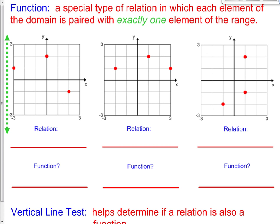Another term is function. A function is a special type of relation in which each element of the domain is paired with exactly one element of the range. Whenever you see a list of ordered pairs, you know it's going to be a function if your x's do not repeat. It's a good idea to write this down: x's cannot repeat. However, the y's can. If it's going to be a function, your x's in the same relation can never repeat, but the y's can.